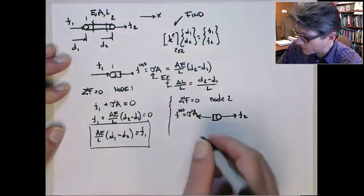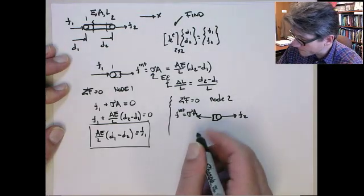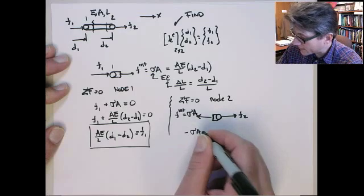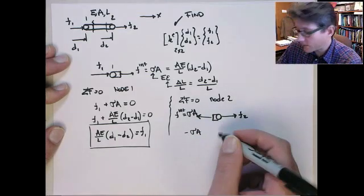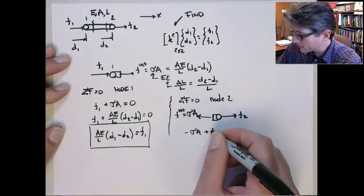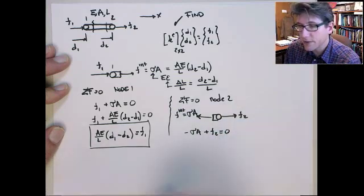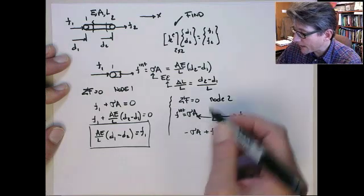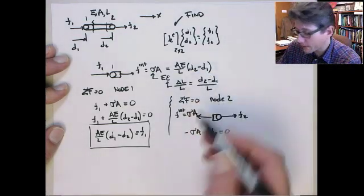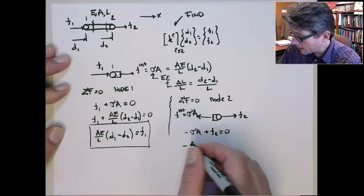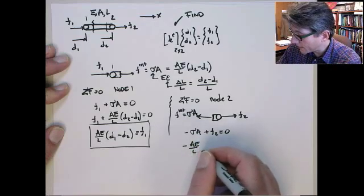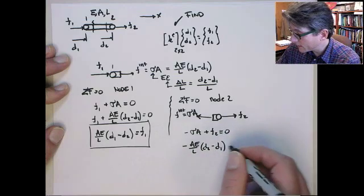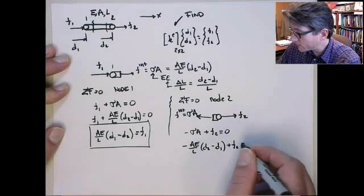So now if we do the sum of forces on node 2, we get that minus sigma A, it's minus because this is acting in the negative X direction, plus F2 is equal to 0. And substituting in for sigma A, AE on L, D2 minus D1, we get minus AE on L, D2 minus D1, plus F2 is equal to 0.